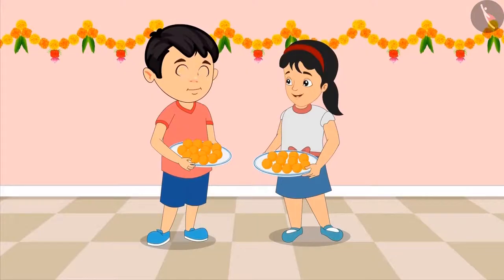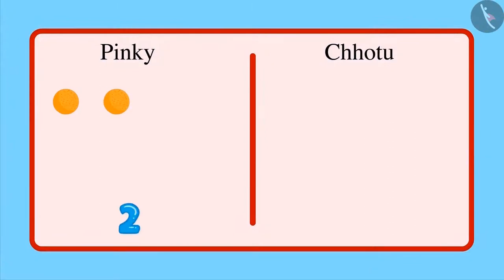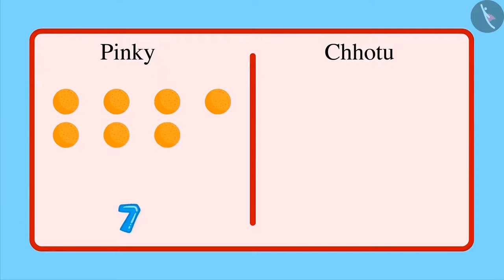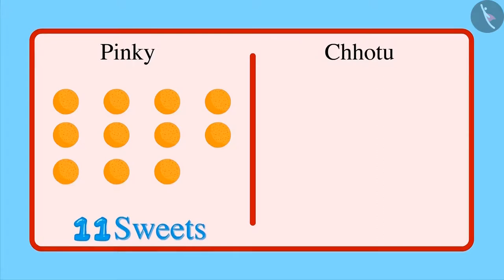Chotu, let us see whose plate has the most sweets. Okay, Pinky. First, let us count the number of sweets in your plate. Okay, Chotu. 1, 2, 3, 4, 5, 6, 7, 8, 9, 10 and 11. There are 11 sweets in your plate.